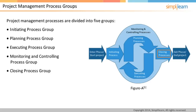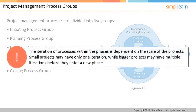The typical project management process in the closing phase releases resources back to the resource pool, so the team members can be assigned to another project. Note that the iteration of processes within the phases is dependent on the scale of the projects. Small projects may have only one iteration, whereas bigger projects may have multiple iterations before they enter a new phase. Project management processes are overlapping activities.